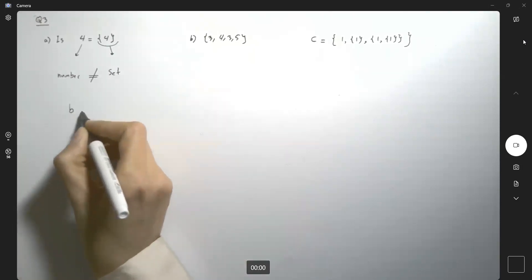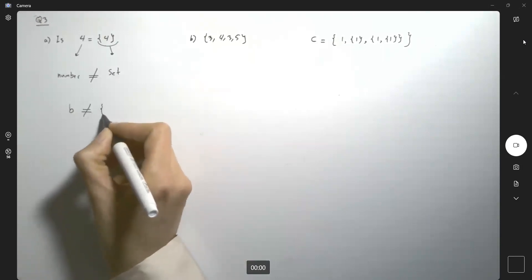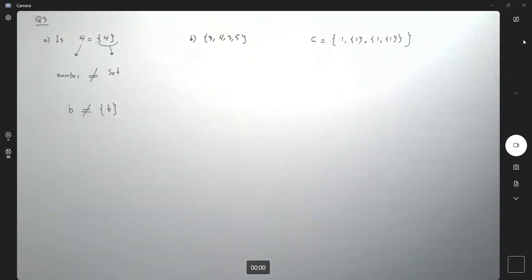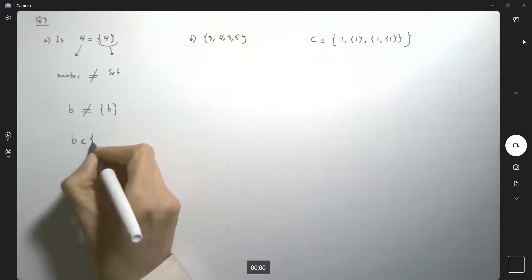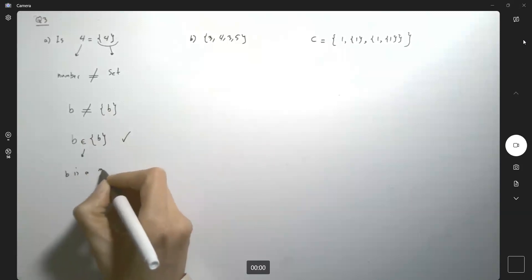So in general, B is not equal to set, including B. We only can say that B belongs to set B. B is a member.